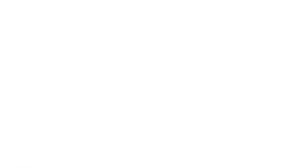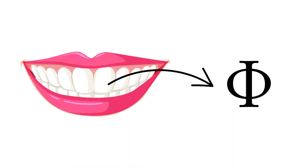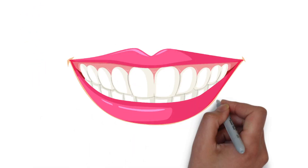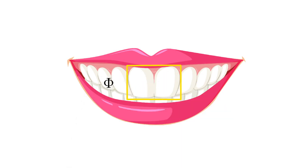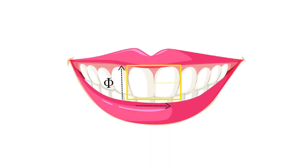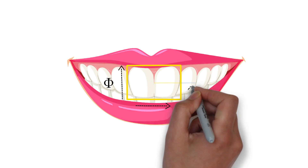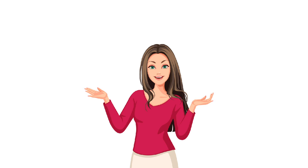Even the dimensions of our teeth are based on phi. The front two incisor teeth form a golden rectangle with a phi ratio in height to width. The ratio of the width of the first tooth to the second tooth from the center is also phi, and the ratio of the width of the smile to the third tooth from the center is phi as well.